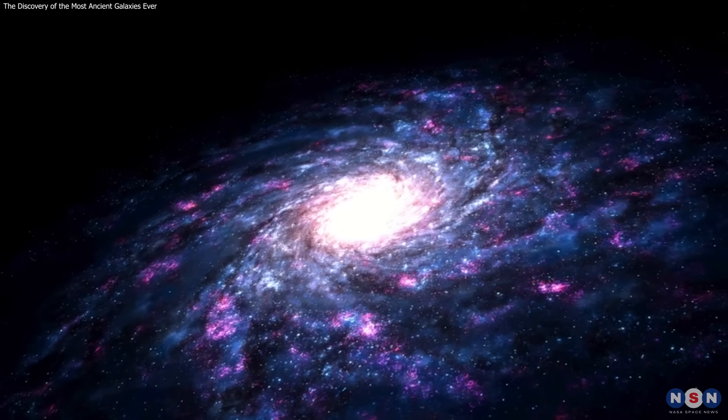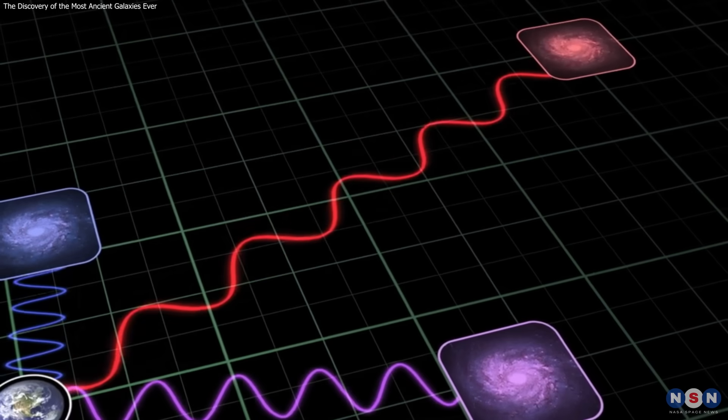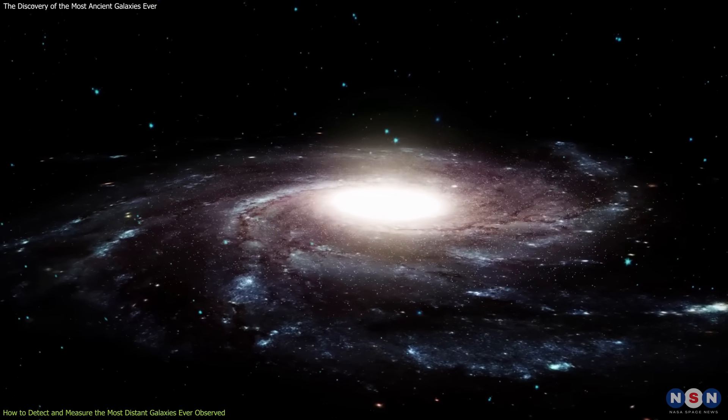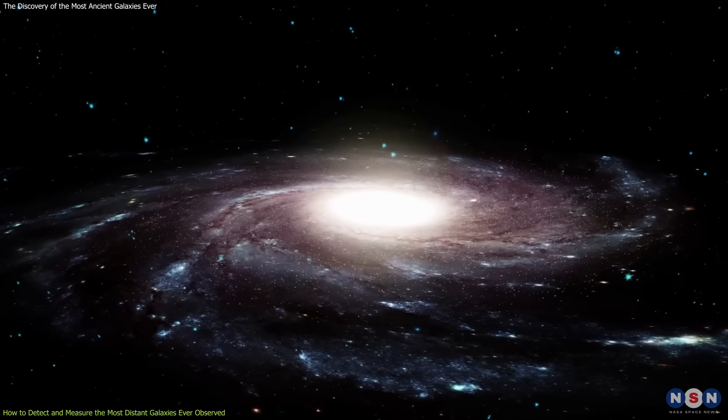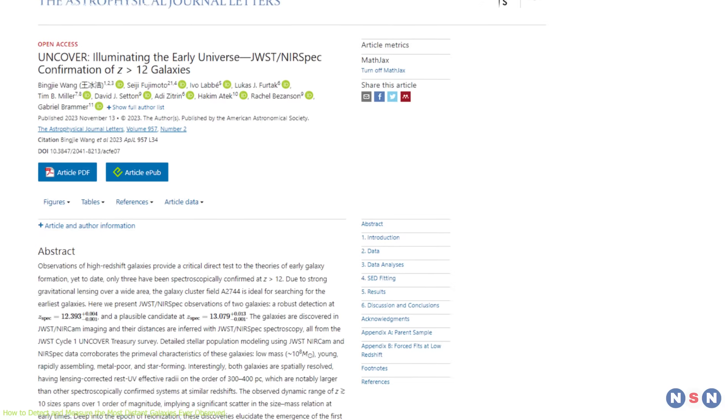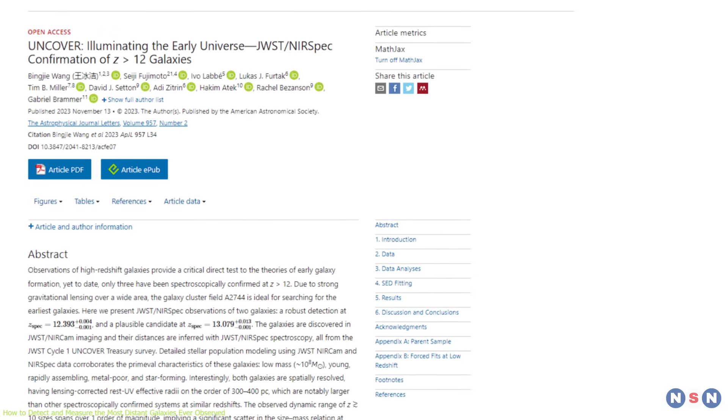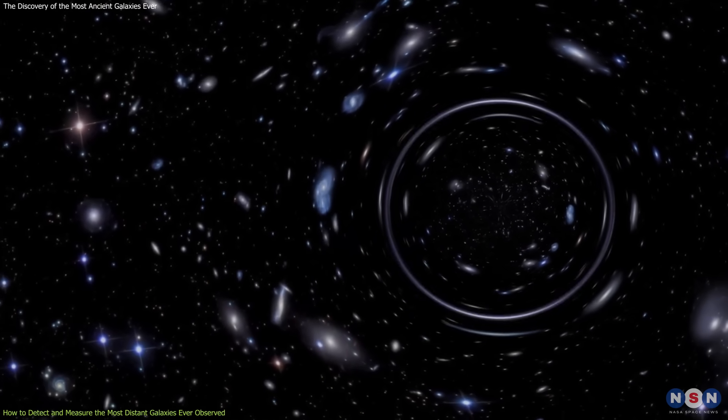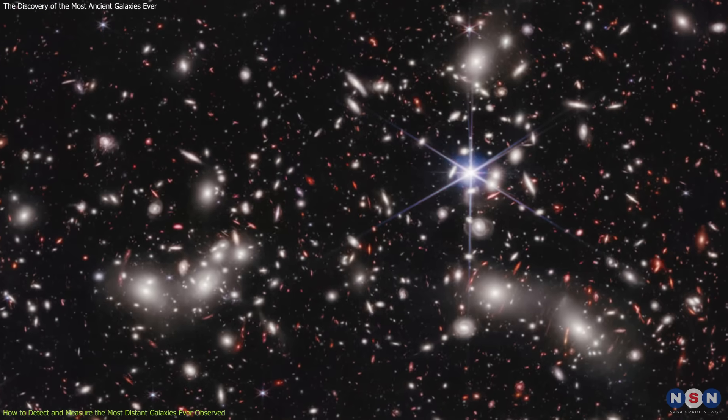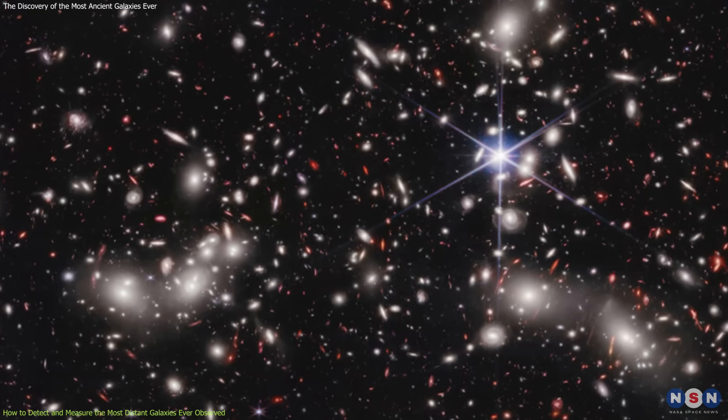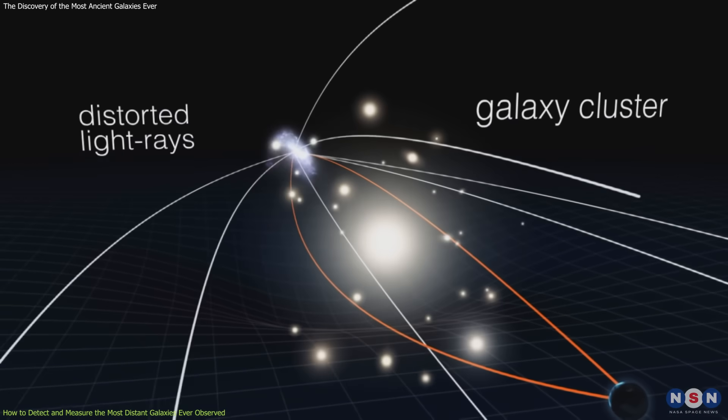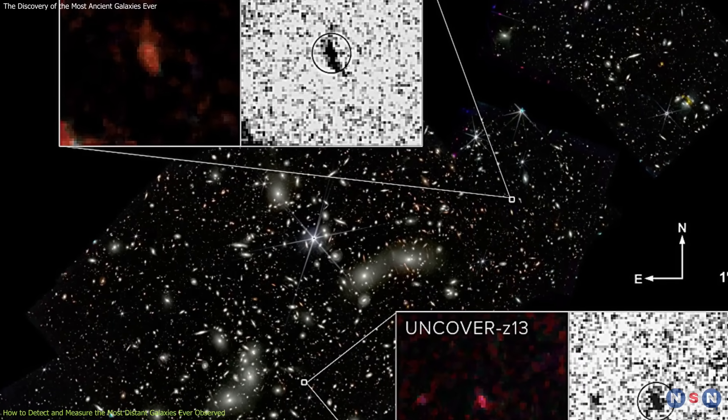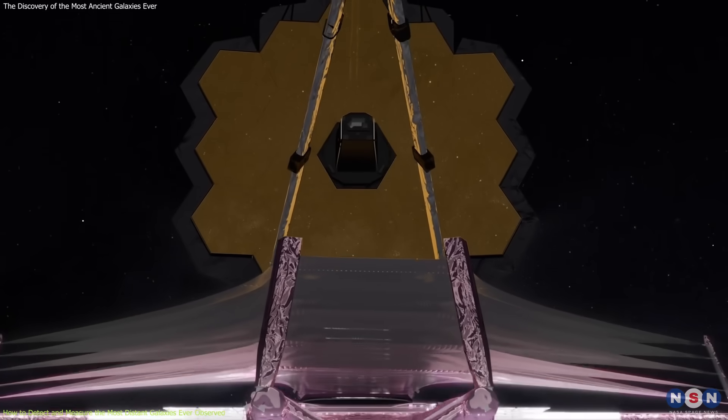How do you find and measure something that is so far away that its light has traveled for more than 13 billion years to reach us? How do you overcome the challenges of observing such faint and elusive objects with the James Webb? These are some of the questions that the researchers had to face when they set out to identify and confirm the distance and properties of the two ancient galaxies. The first step was to use the gravitational lensing effect of Pandora's Cluster, a massive cluster of galaxies that acts like a natural telescope, bending and magnifying the light of the background objects. This effect allowed the researchers to detect the two galaxies, which would otherwise be too faint for the JWST to see.